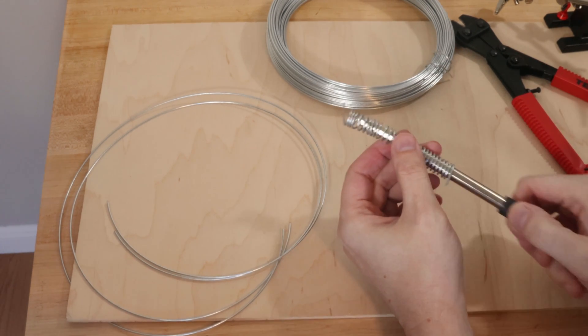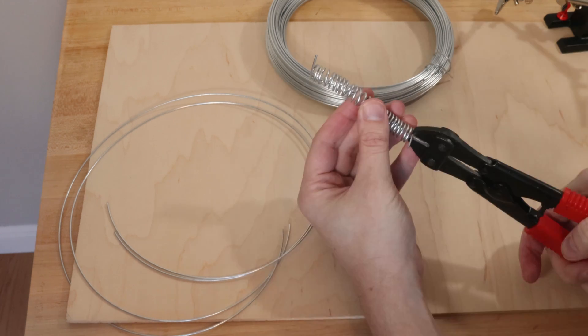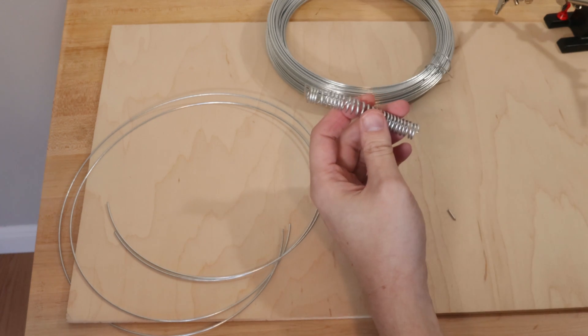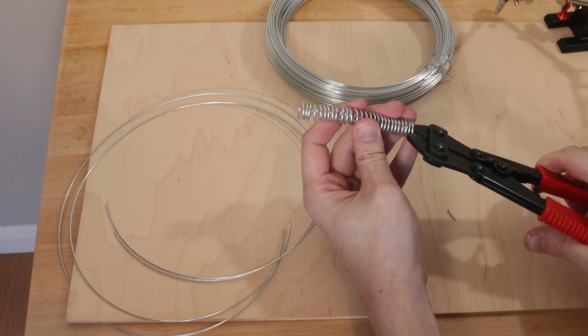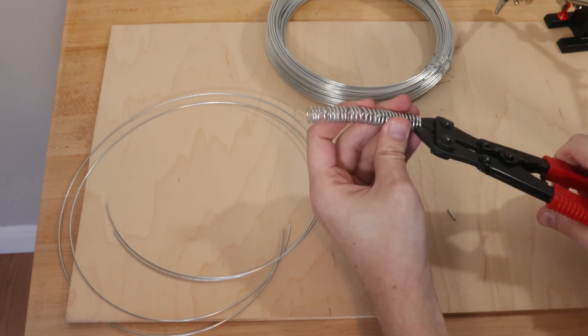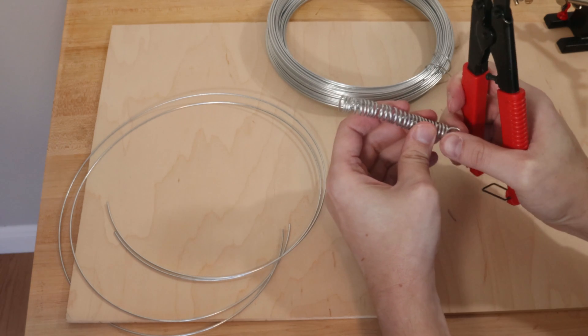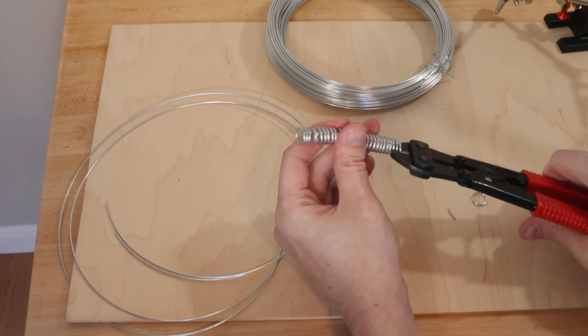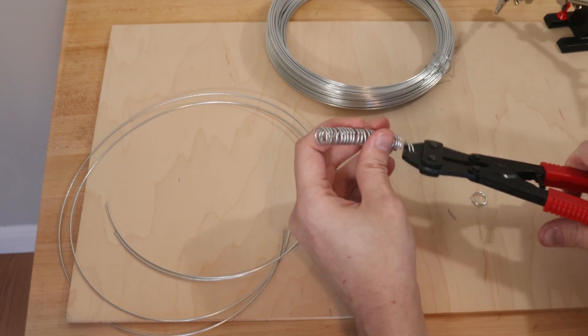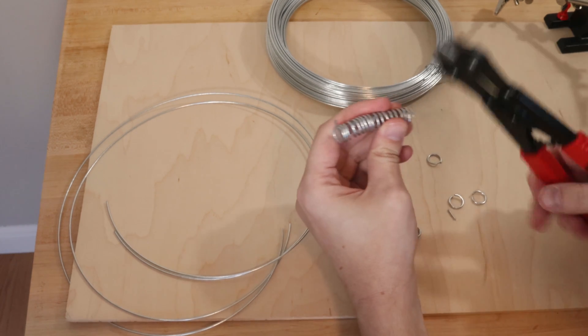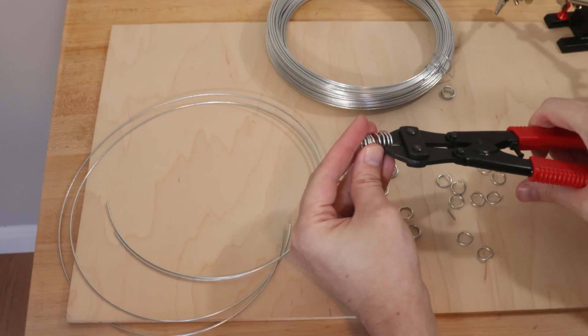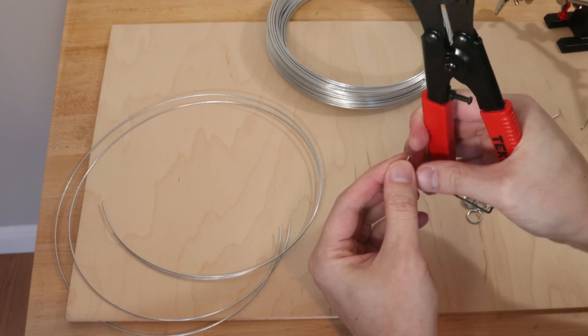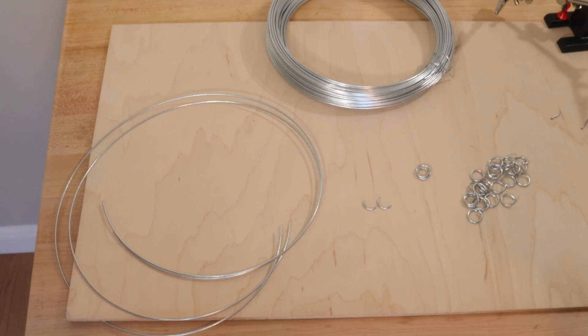Once the wire is all coiled up, you can remove it off the form and start cutting it up. If you cut the coil, you want to separate into each individual coil so you have small little circles. Once you're done with the circles, you cut them in half and create these little U shapes that will connect the rails together.